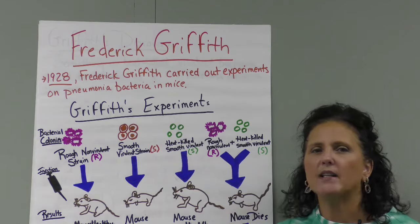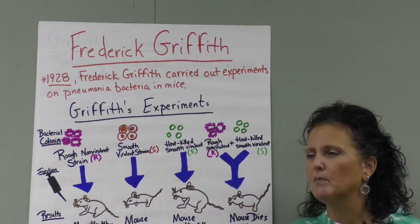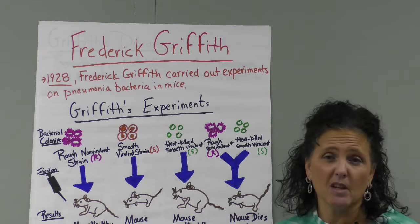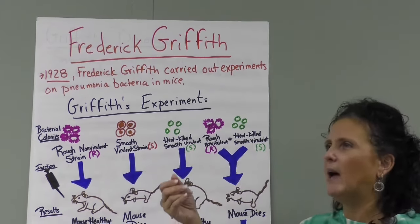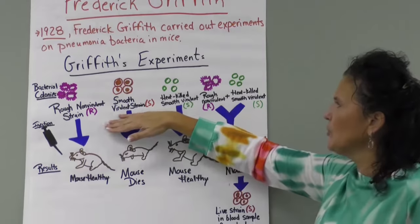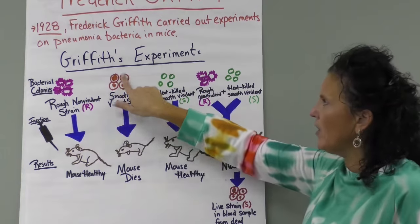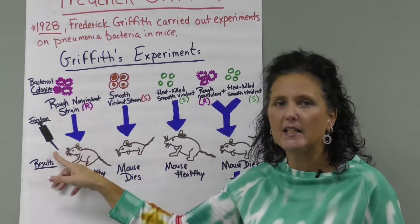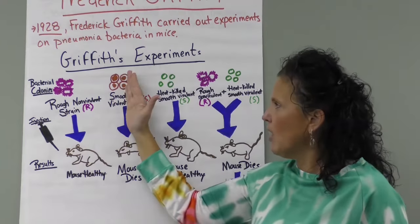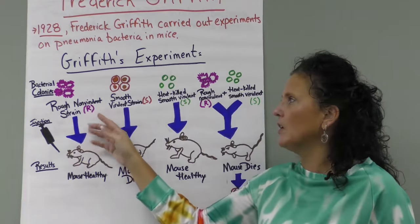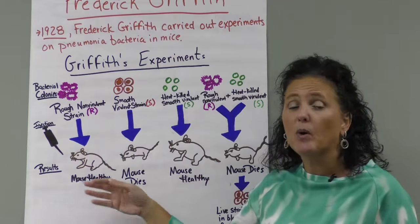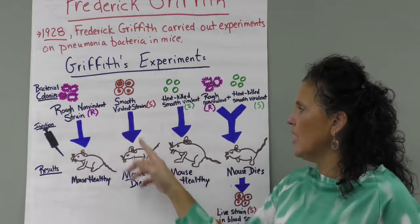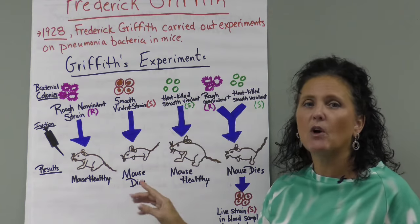Bacteria have protein coats on them, and some produce polysaccharides and sugars. He also had a smooth strain, which was virulent — it caused disease and had smooth outer coats. He injected mice with these bacteria. Injecting the non-virulent strain left the mouse healthy, confirming it didn't cause disease. Injecting the virulent smooth strain caused the mouse to die, confirming it was disease-causing.